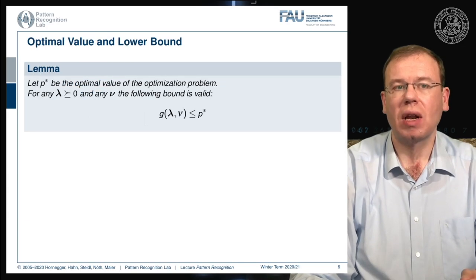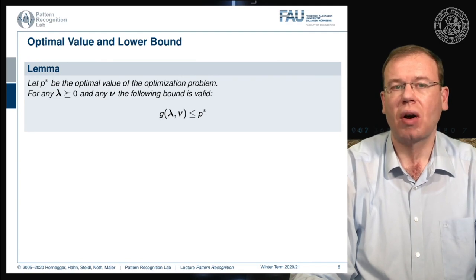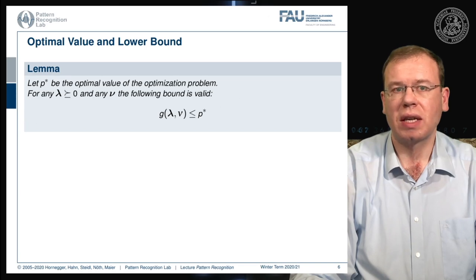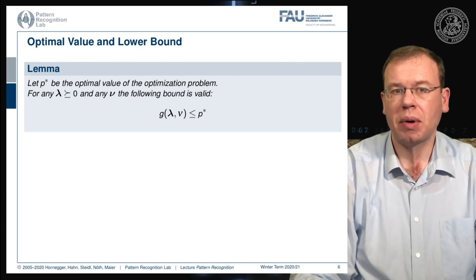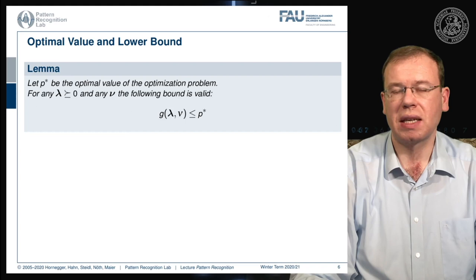Let p* be the optimal value of the optimization problem. Then for any lambda greater than or equal to zero and any nu, the following bound is valid: p* is an upper bound for our Lagrange dual, meaning p* is the maximum value that can be attained by the Lagrange dual function.